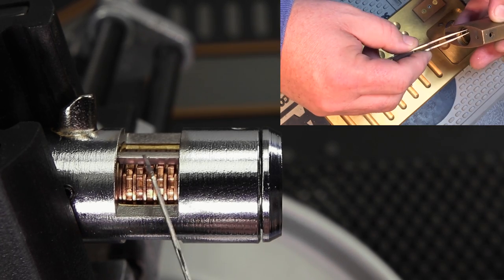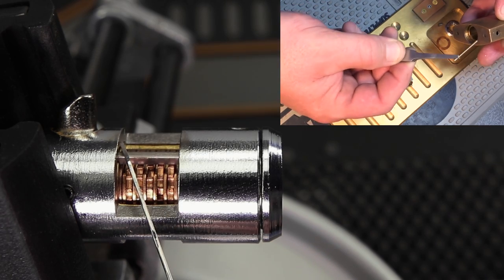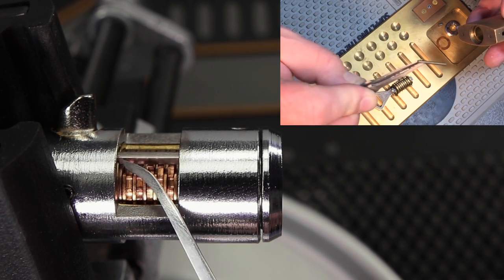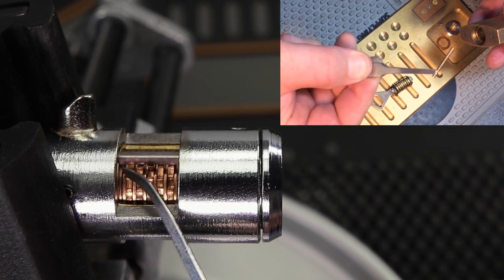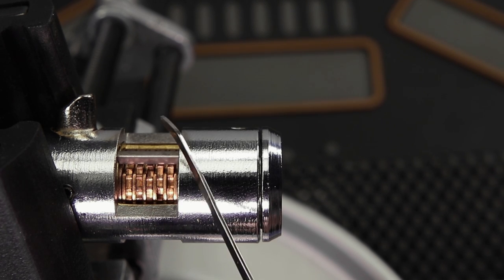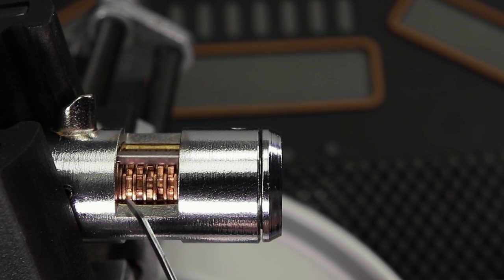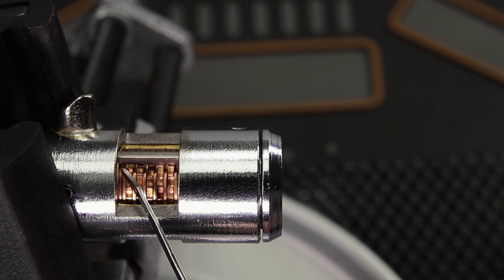What keeps the lock secured is the sidebar you see going across here. This sidebar is coming into contact with the metal over here and it makes it so that the lock cannot turn independently and keeps the lock in a locked position.